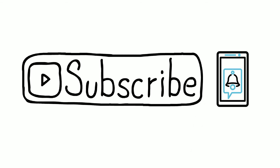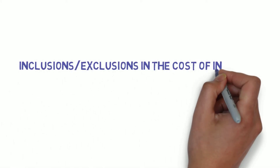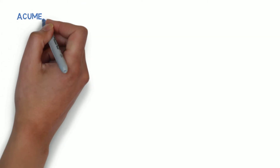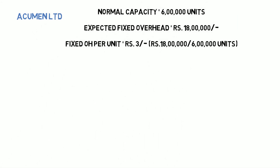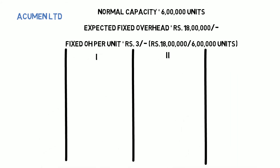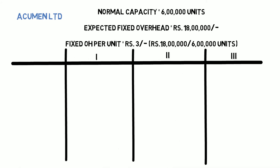Let's begin with the first illustration on inclusions and exclusions in the cost of inventory. In this example, Acumen Limited has a normal production capacity of 6 lakh units. Fixed overheads are expected to be 18 lakh rupees, thus the fixed overhead per unit comes out to be 3 rupees per unit.